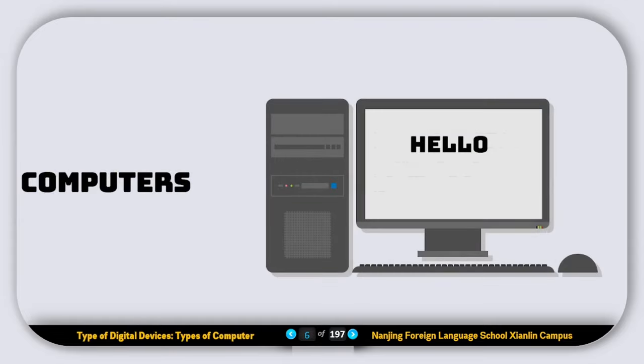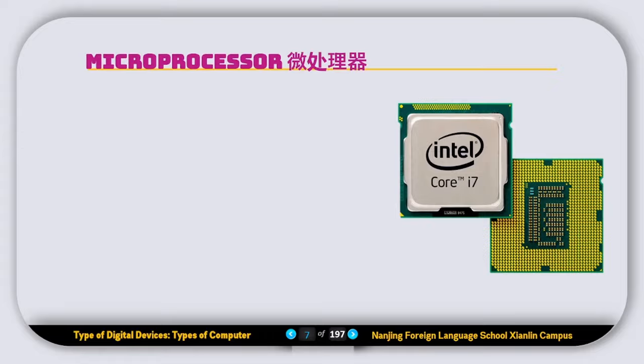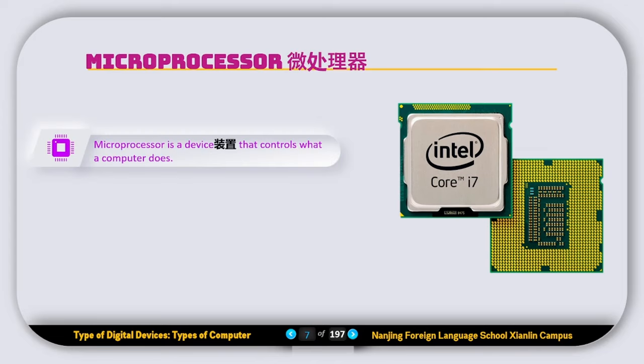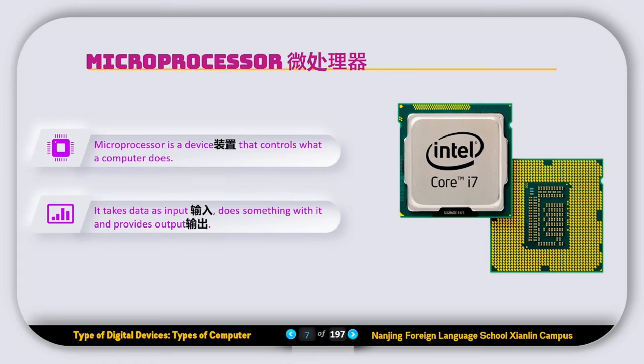The first digital device we're going to discuss is computers. Before we discuss computers, let's talk about microprocessors, because the microprocessor is the main component of every computer system. A microprocessor is the device that controls what a computer does — it takes data as input, does something with it, and provides the output. Basically, it takes the input, processes it, and gives us the output using output devices.